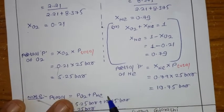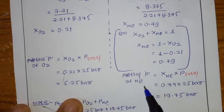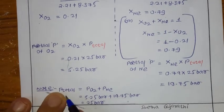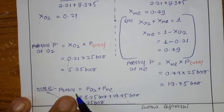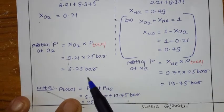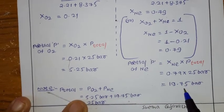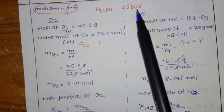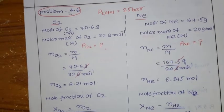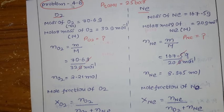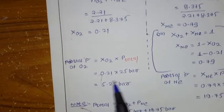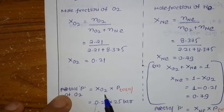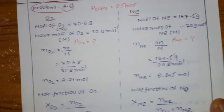Let us verify: According to Dalton's Law, P_total = partial pressure of Oxygen + partial pressure of Neon = 5.25 + 19.75 = 25 bar. This matches the given total pressure, so our answer is correct. You should be very careful about which pressure is given — partial or total — and how to calculate the mole fraction of each gas. These are very important problems for exams.